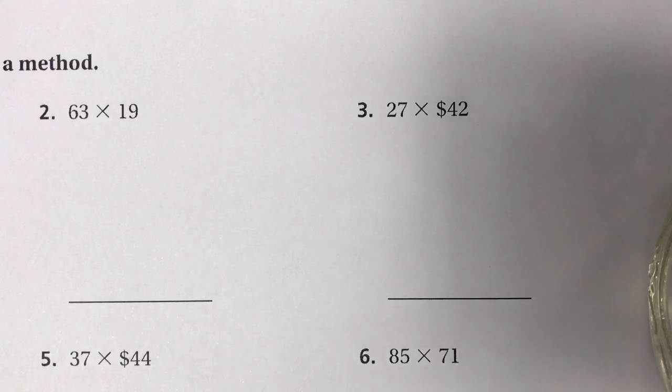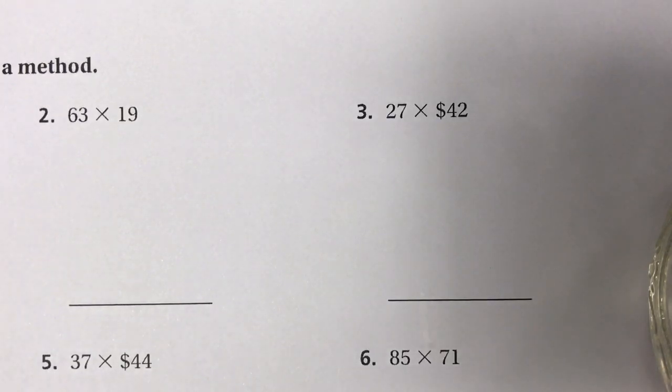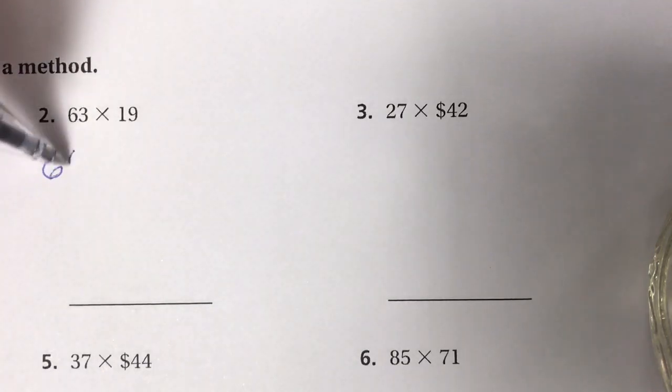The first method I'm going to use is rounding. I'm going to look at the factors for number 2, and I know that on a number line, 63 is closer to 60 than it is to 70. So I'm going to round this to 60.